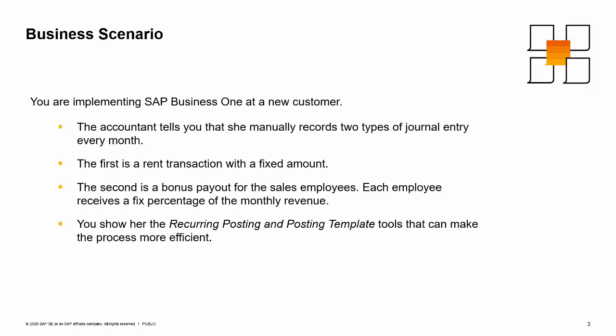Imagine that you are implementing SAP Business One at a new customer. The accountant tells you that she manually records two types of journal entry every month. The first is a rent transaction with a fixed amount. The second is a bonus payout for the sales employees, where each employee receives a fixed percentage of the monthly revenue. You show her the recurring posting and posting template tools that can make the process more efficient.